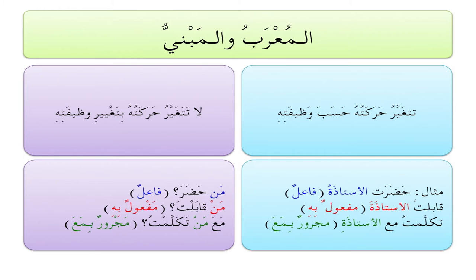For example, من حضر — it is a فعل (verb), meaning 'who came?' It is supposed to be the subject of the sentence, but it remains the same and cannot show a ضمة. من قابلت — مفعول به, meaning 'whom did you meet?' Notice the 'whom' in English is actually a remnant of a case system that used to exist in English. مع من تكلمت — 'with whom did I speak?' The من here is مجرور بـ مع — it came after مع. However, unlike الأستاذة, it cannot show a كسرة at its end.